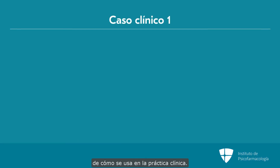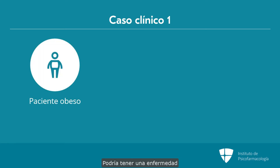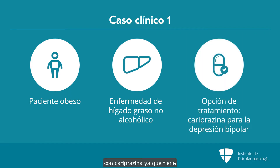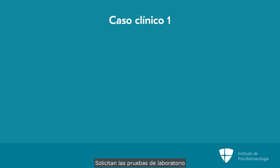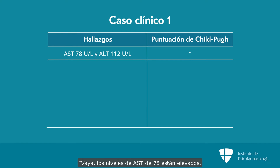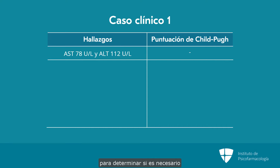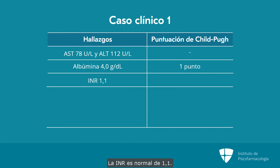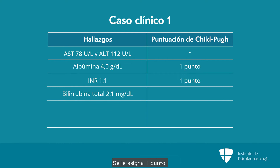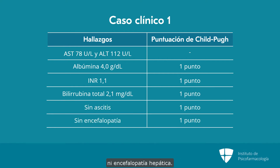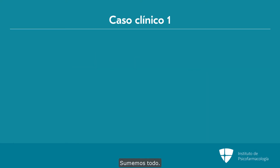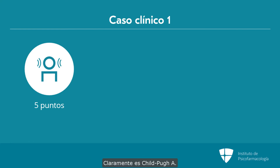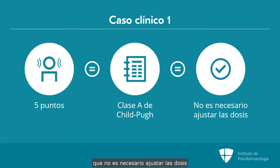Here's a couple of examples on how to use this in clinical practice. We have an individual who is obese, possibly with non-alcoholic fatty liver disease, and we'd like to put her on cariprazine for bipolar depression. Her AST is elevated at 78 and ALT at 112 — a lot of inflammation. But we go to Child-Pugh for determining whether we need to adjust drug dosages. Her albumin is normal at 4.0, one point. INR is normal at 1.1, one point. Total bilirubin is 2.1, one point. She has no ascites and no hepatic encephalopathy. Total: five points — she is clearly Child-Pugh A, meaning no dosing adjustment is needed.